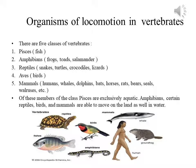Now, the organs of locomotion in vertebrates. There are five classes of vertebrates: Pisces, amphibians, reptiles, Aves, and mammals. Pisces includes fishes; amphibians include frogs, newts, and salamanders; reptiles include snakes, turtles, crocodiles, and lizards. Aves include all birds, and mammals include humans, whales, dolphins, bats, horses, rats, bears, seals, walruses, and others.